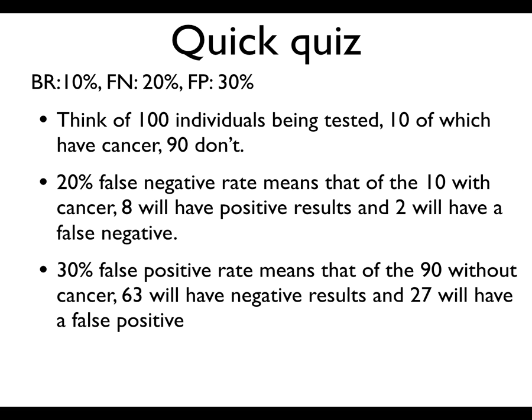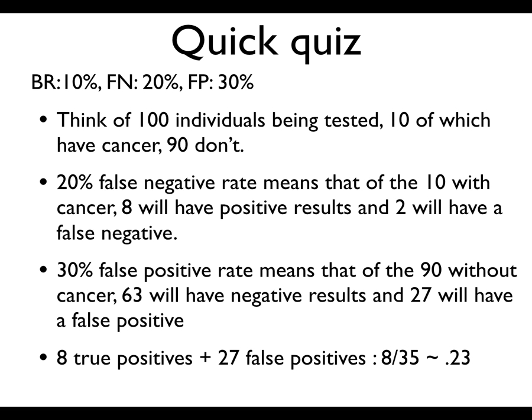Having worked out these numbers, we can see: what are the people with a positive result? There are 8 who have cancer and get a true positive result, and 27 who don't have cancer but also have a positive result. So 8 divided by 8 plus 27 is about 23%.